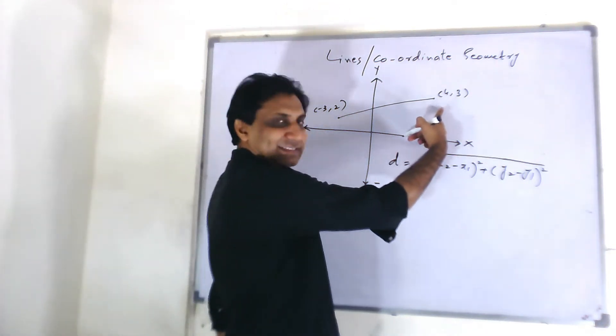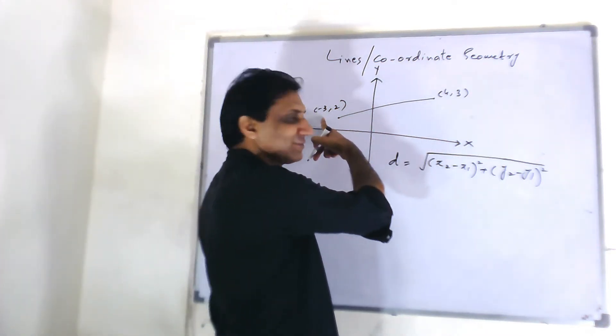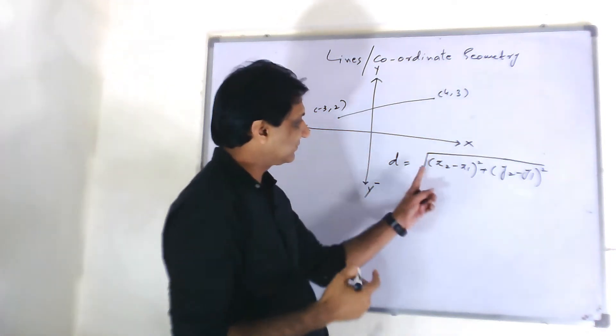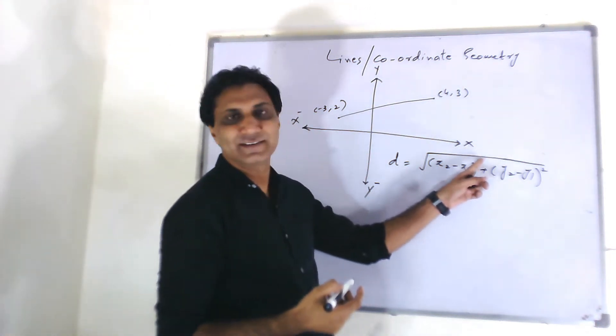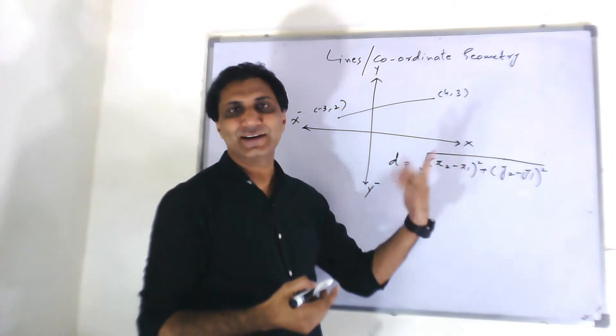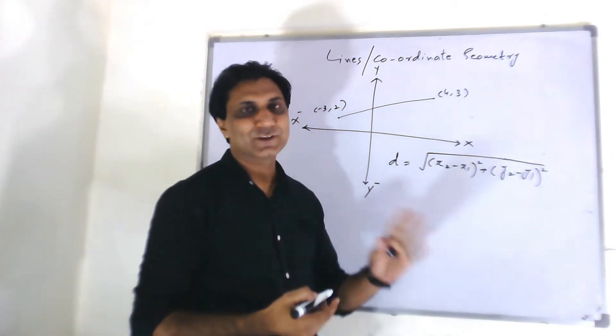D is equal to under root x2 minus x1 whole square plus y2 minus y1 whole square. You want to take this x1, y1 or this x1, y1, it is fine. It does not matter. You subtract them and take square, so taking square nullifies the minus sign.